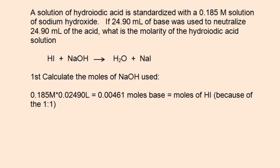The first step is to calculate the moles of sodium hydroxide used. To do this, multiply the molarity of the sodium hydroxide, 0.185, by the volume of sodium hydroxide used, in this case 0.0249 liters, giving you 0.00461 moles of base, which is the same as the moles of acid in the Erlenmeyer flask.